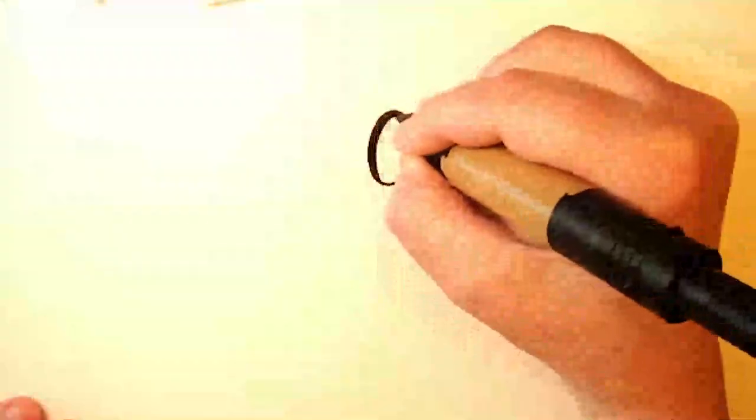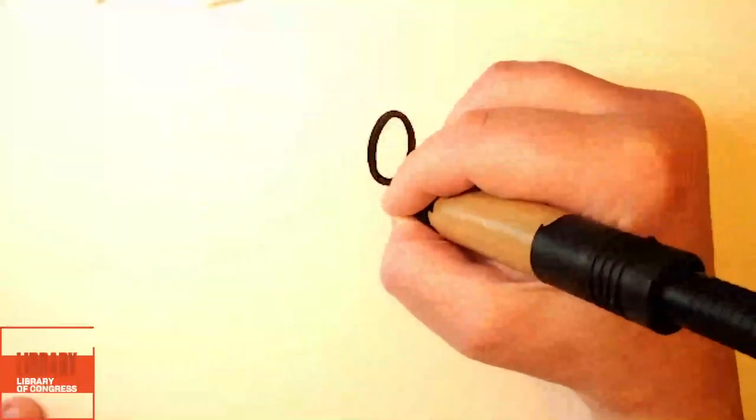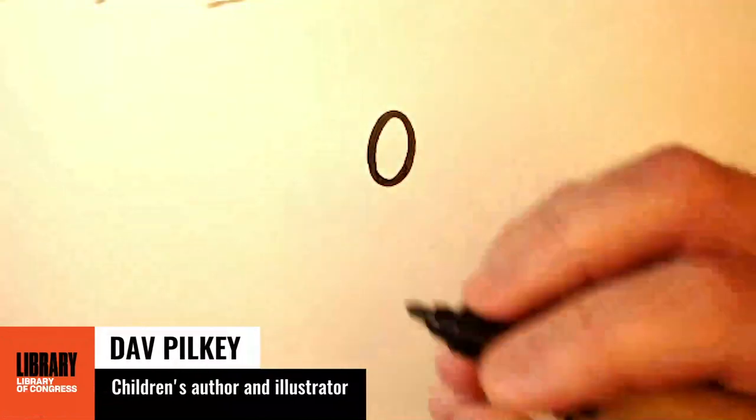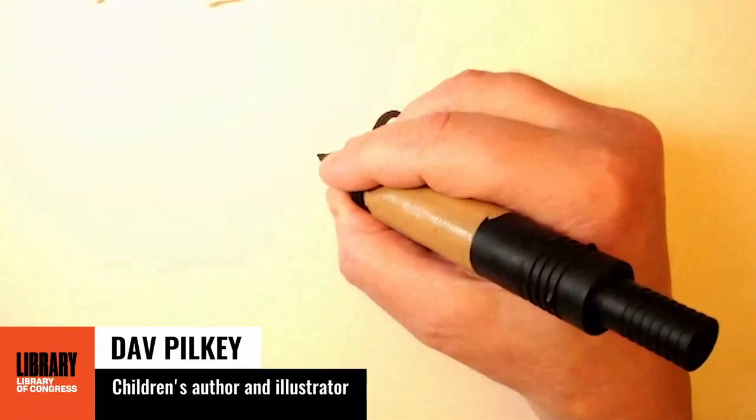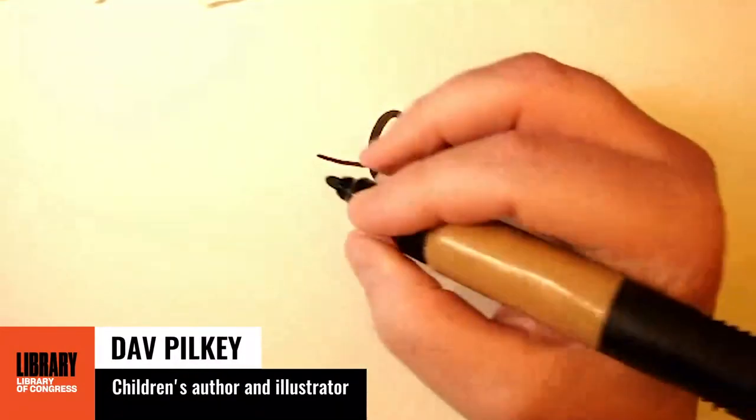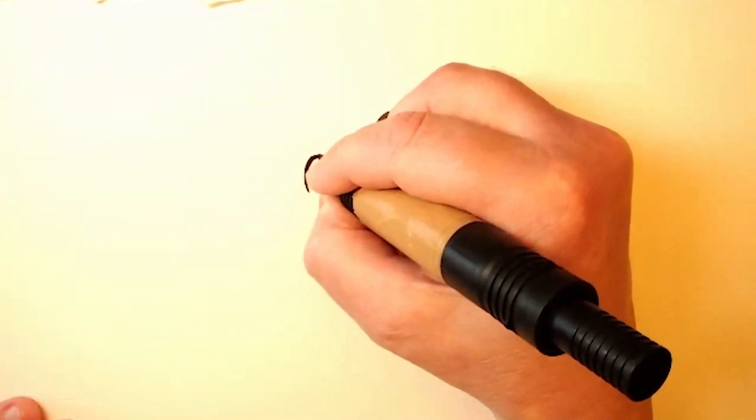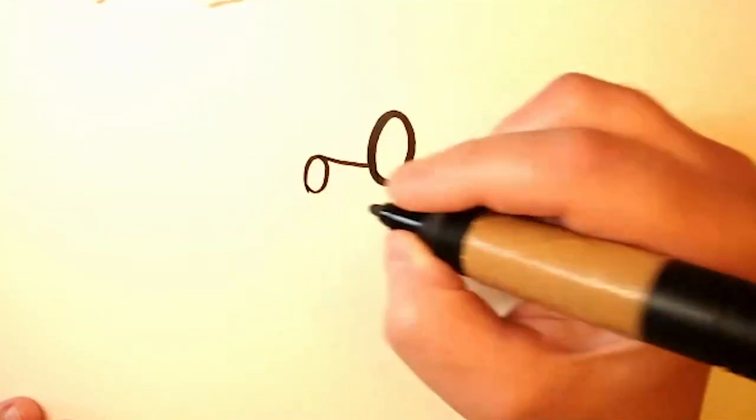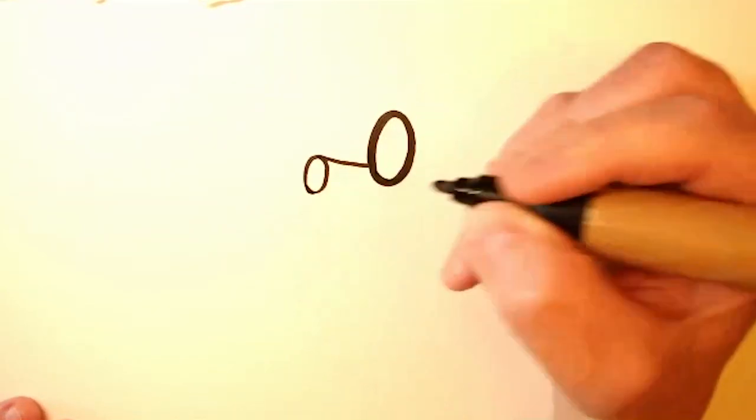Piggy starts out with a large oval. We'll fill that in and make the line real thick. And then we draw a little line out here and a small oval. And inside the small oval, which is his nose, we add two little dots.